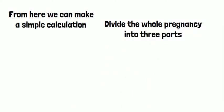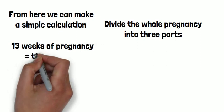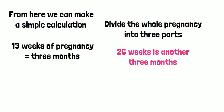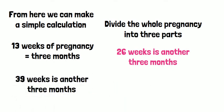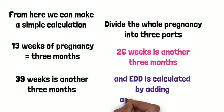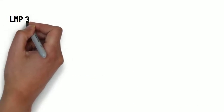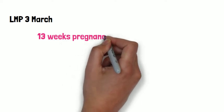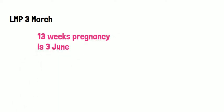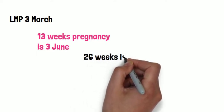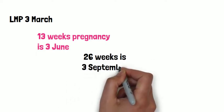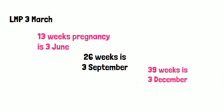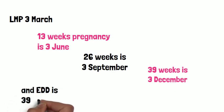The first three months, the next three months, and the last three months make 13, 26, and 39 weeks of pregnancy. If we add one week to the last date we get the expected date of delivery. So if a woman had her last menstrual period on the 3rd of March, she will be 13 weeks pregnant on the 3rd of June, 26 weeks on the 3rd of September, and 39 weeks on the 3rd of December. Adding one more week she will be 40 weeks on the 10th of December.